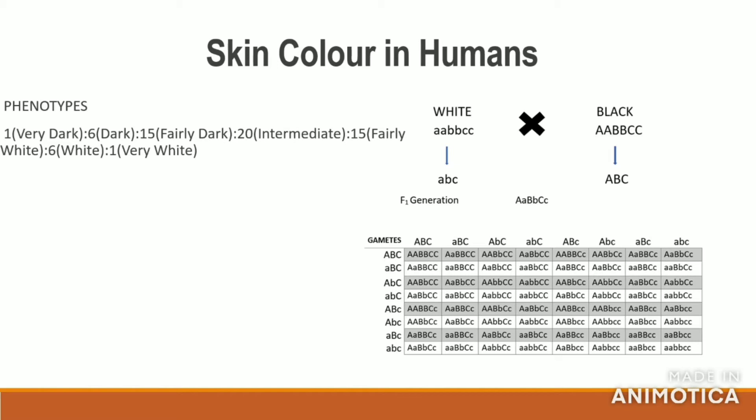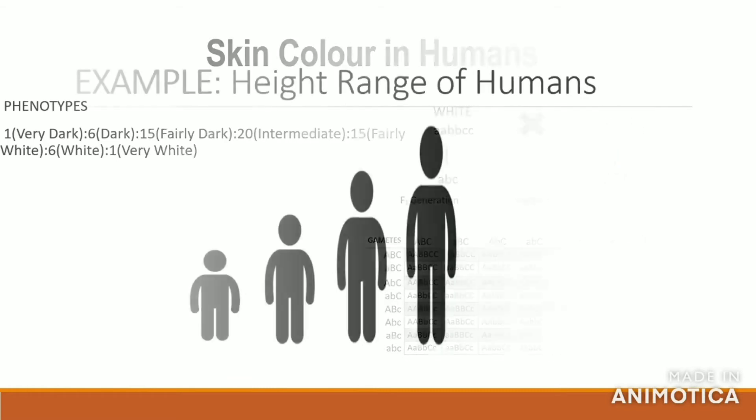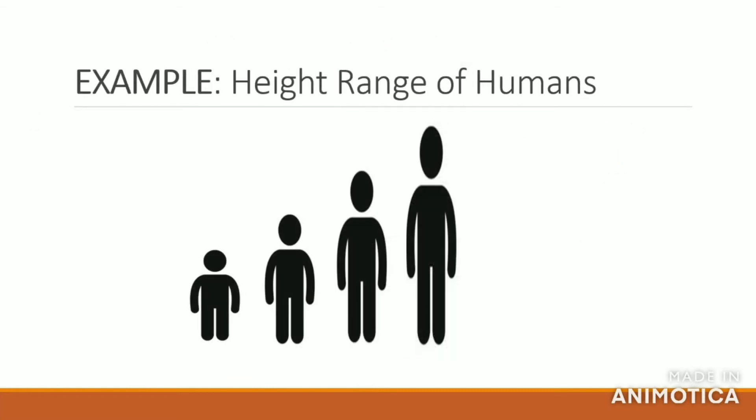1 very dark (negro), 6 dark, 15 fairly dark, 20 intermediate, 15 fairly white, 6 white, and 1 albino. Similarly, for human height, there can be a huge number of possible outcomes ranging from short to tall, as you can see here.